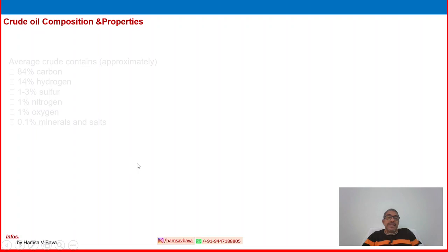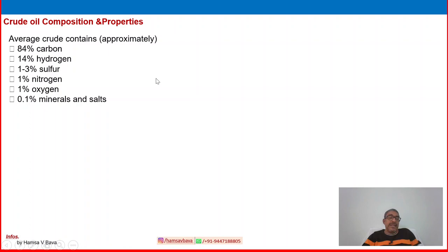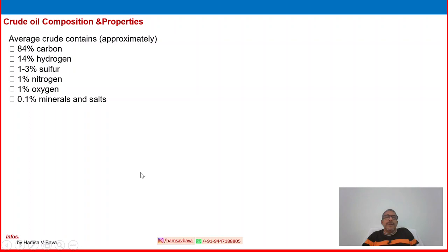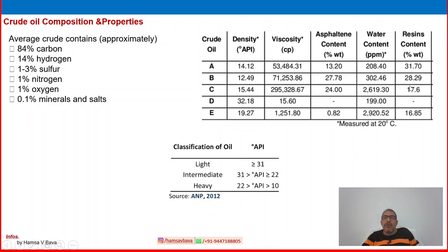Crude oil composition and properties are also important. Average crude contains approximately 84% carbon, 14% hydrogen, 1 to 3% sulfur depending on the area or geographical differences, as well as nitrogen, oxygen, and metals and salt. These are average crude values — they can vary slightly for heavy crude, light crude, medium crude, extra sweet crude, sweet crude, sour crude, etc. — commercial names used based on properties and composition.